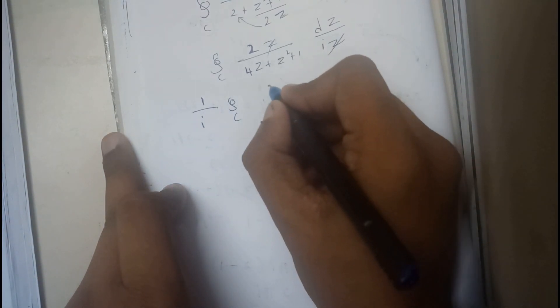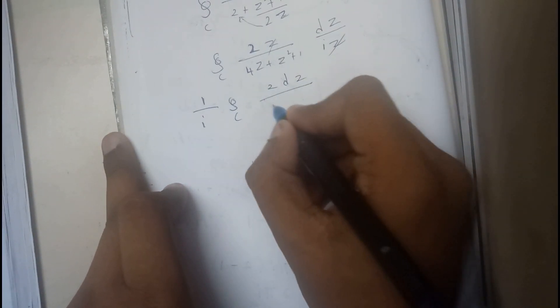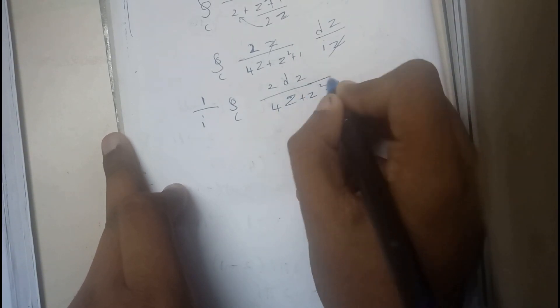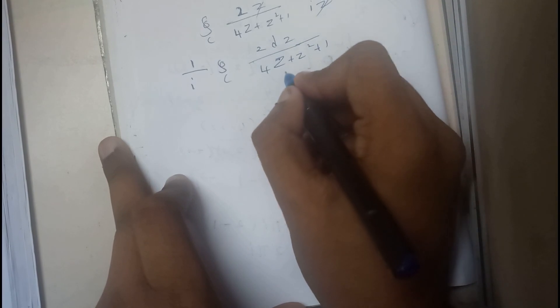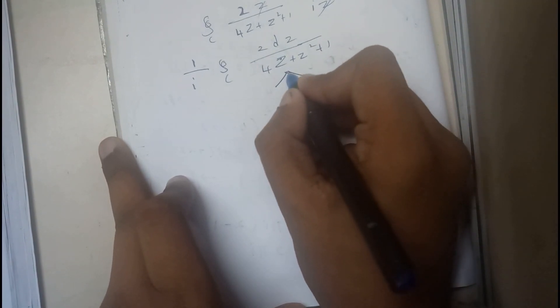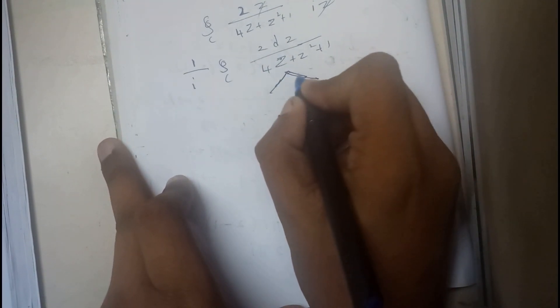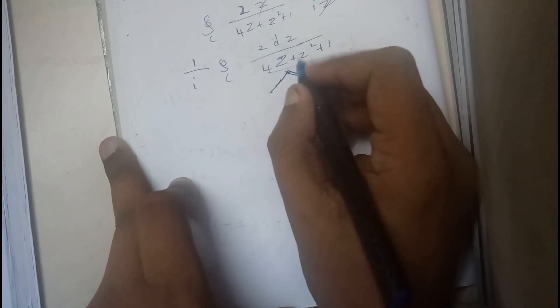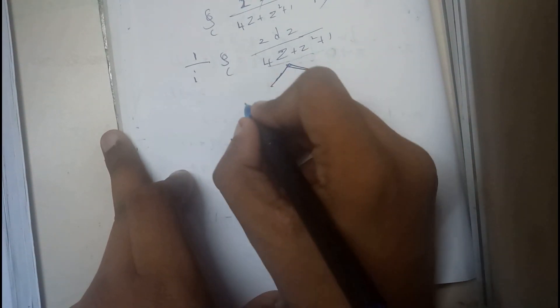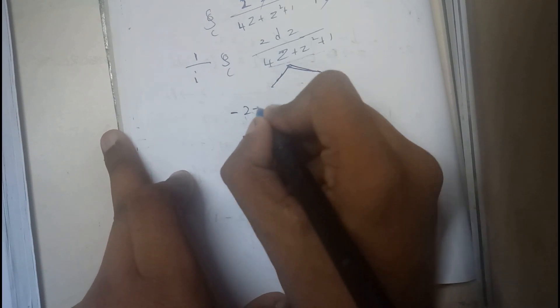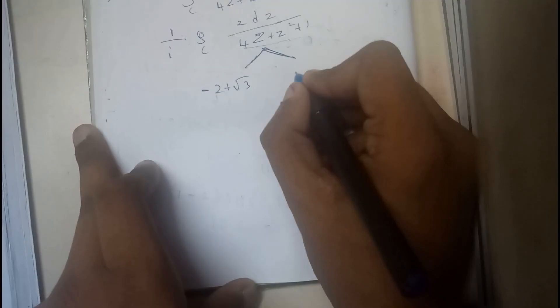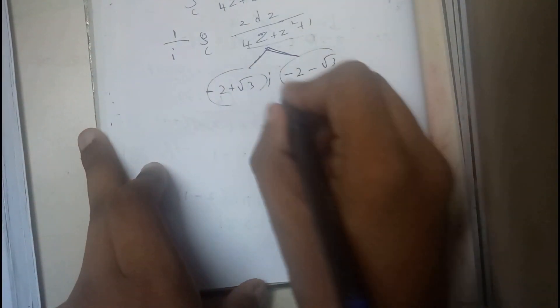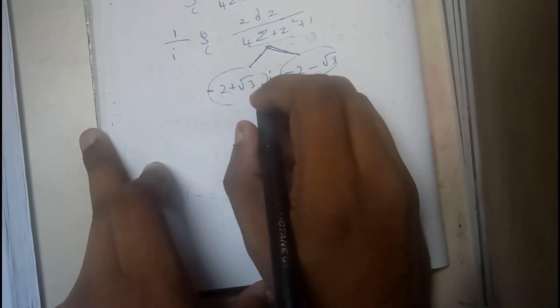So that it will be clear: integral over c of 2dz/(4z + z² + 1). So now we will be finding the poles. So basically I will be using calc for these kind of things as it is not a normal equation. By using calc I have just got these things. These are the roots. So these are the two roots that I got.